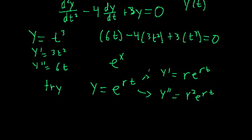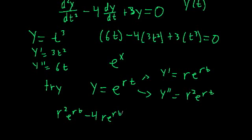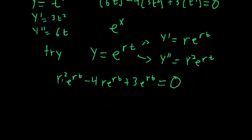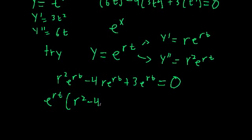Now let's plug these derivative values into our original differential equation. We get r squared e to the rt minus 4 times r e to the rt plus 3 times e to the rt, all equal to 0. Every single term has this exponential function in it, so we can factor that out: e to the rt times (r squared minus 4r plus 3) equals 0.